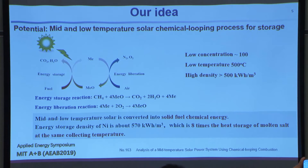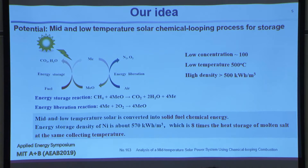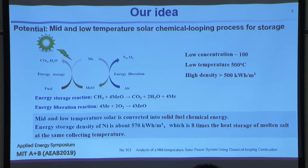Look at this schematic of the system. There are two reactors or two steps. The first is the reduction reactor on the left. The fuel, such as methane, is input into the reduction reactor, where it reacts with the metal oxide — the oxygen carrier, maybe nickel oxide. This produces CO2 and water, and absorbs solar heat from the solar input. At the same time, the metal oxide is reduced into metal.